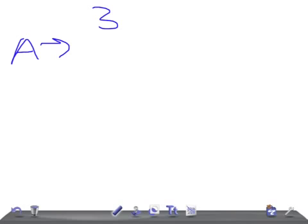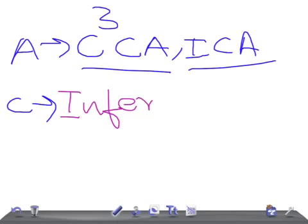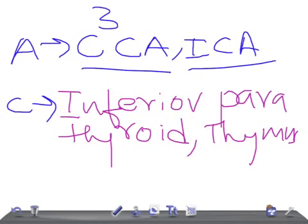The artery that arises from the third pharyngeal arch is the common carotid artery or internal carotid artery — CCA or ICA. The corresponding pouch structures are the inferior parathyroid and the thymus. Remember: inferior parathyroid arises from the third arch, and the superior parathyroid arises from the fourth arch.